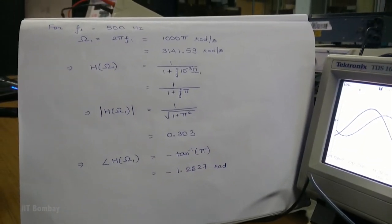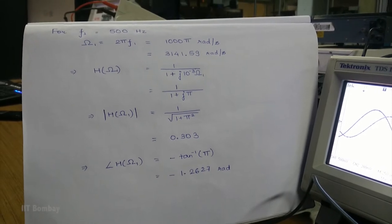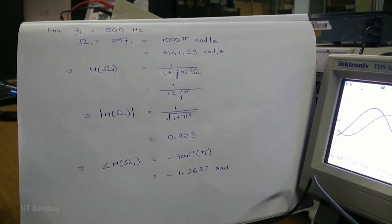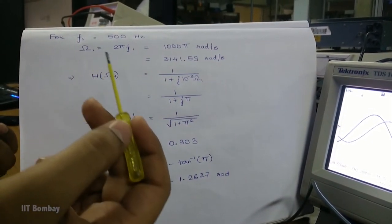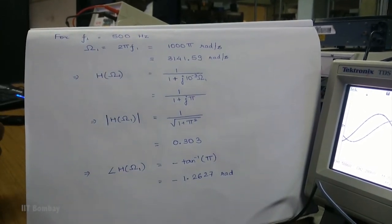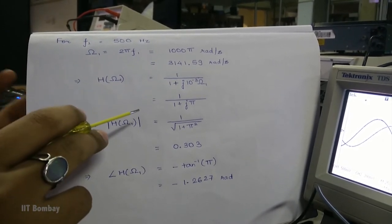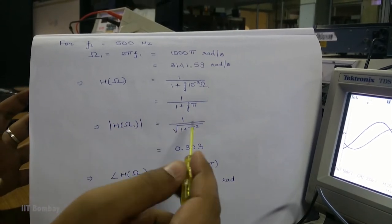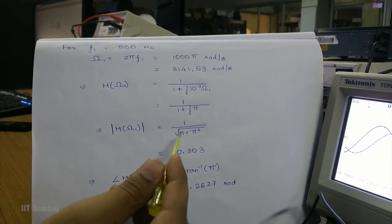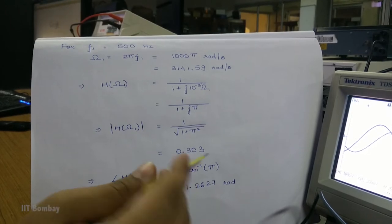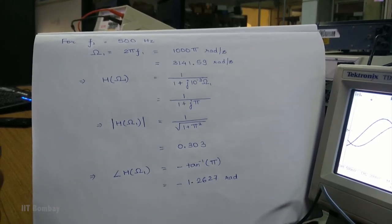First, we will send a sinusoid of frequency 500 Hz as an input to the RC circuit. If the frequency is 500 Hz, the angular frequency Omega₁ is equal to 1000π radians per second, or approximately 3141.59 radians per second. This implies that the transfer function H(Omega₁) is equal to 1 upon (1 + j·π). The amplitude of the transfer function is approximately 0.303, and the argument is equal to minus 1.2627 radians.